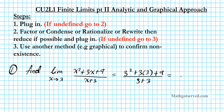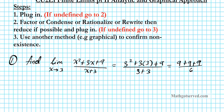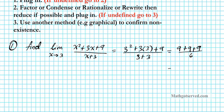Let's simplify and that will be our result. 3 squared is 9, plus 3 times 3 is 9, plus 9, over 3 plus 3 is 6. So 9 plus 9 plus 9 is the same as 9 times 3, which is 27 over 6. Divide top and bottom by 3 and the answer is 9 over 2. That's your final result.